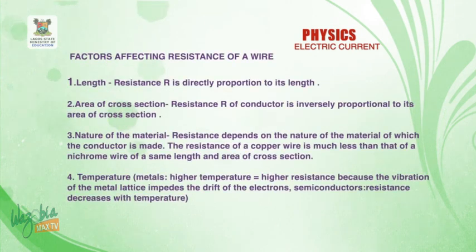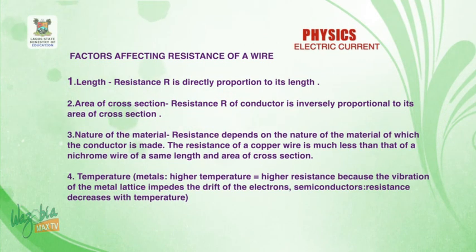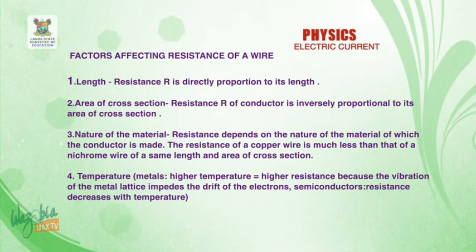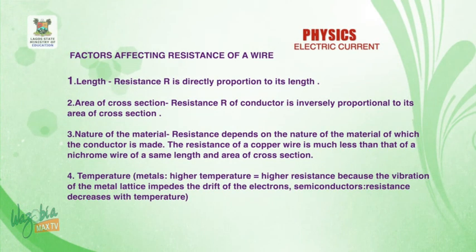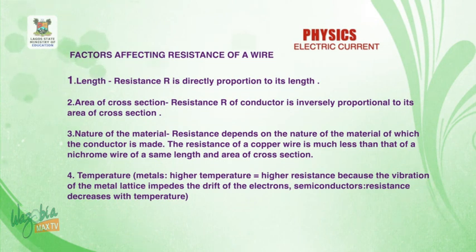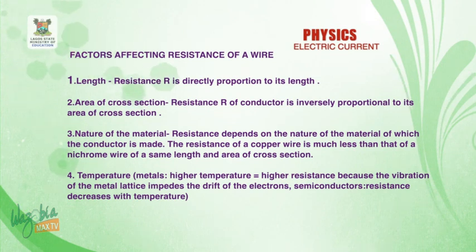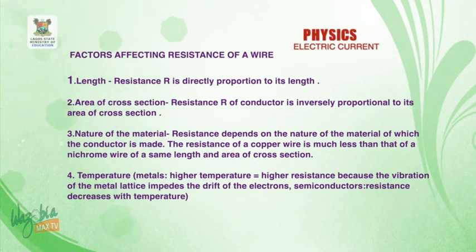Let's look at the factors affecting resistance of a wire. There are four factors. One: length — resistance is directly proportional to its length. Two: area of cross-section. Three: nature of the wire — what material is the conductor made of? Four: temperature — the temperature of the material is also a factor. So the four factors are: length, cross-sectional area, nature of the material, and temperature.